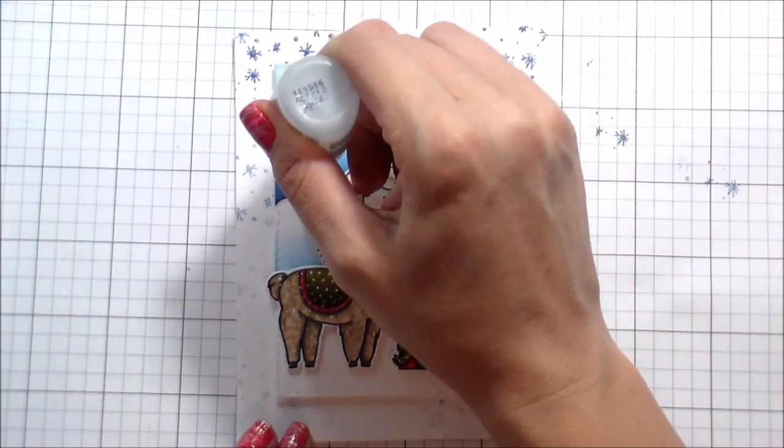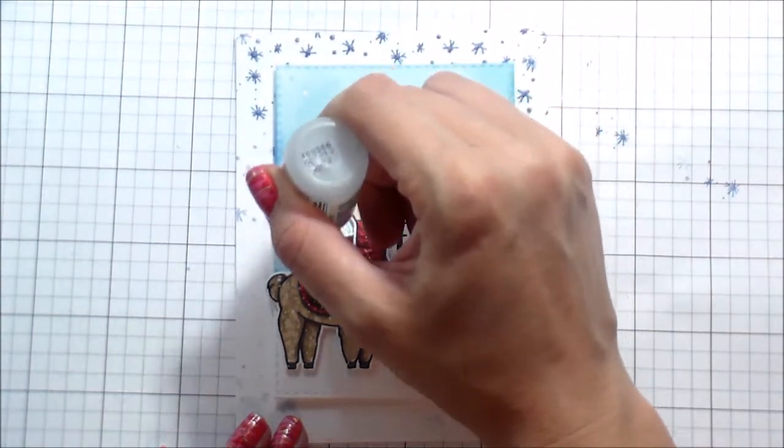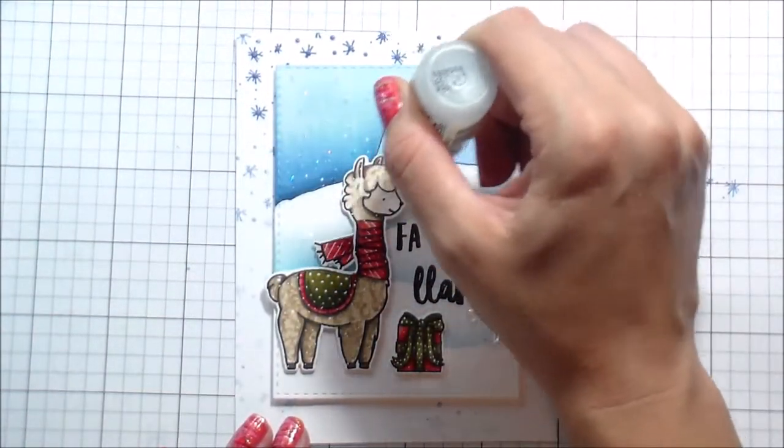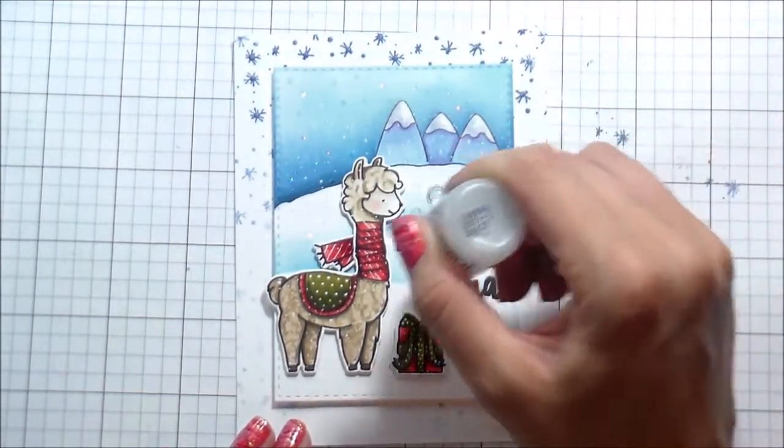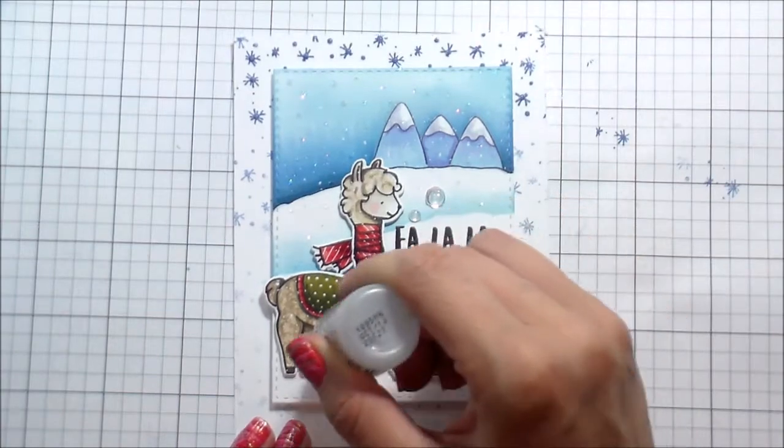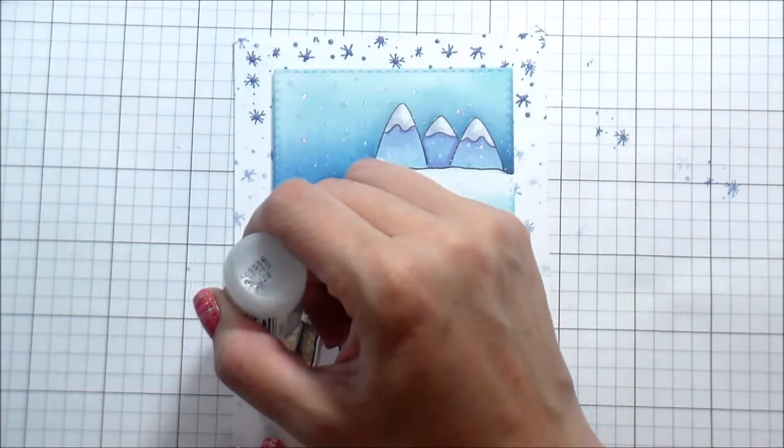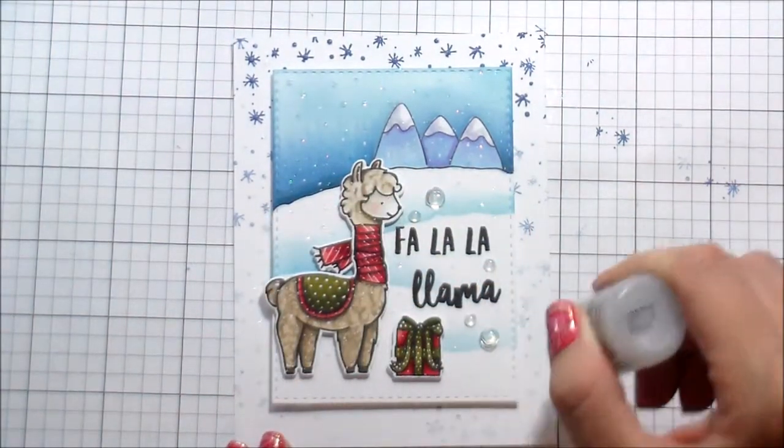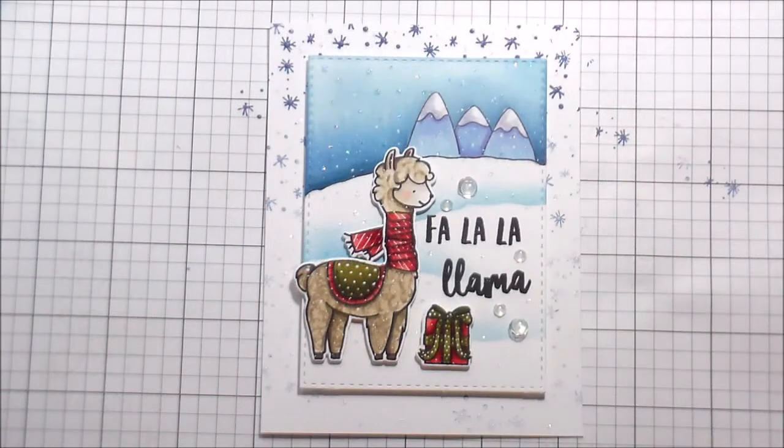Going to add some clear sequins from the neat and tangled clear sequin party mix. And then before Wink of Stella, we had this thing called Stickles. I don't know how long you've been in the crafting industry, but I've been here a minute. I loved Stickles, particularly Stardust Stickles because that matched everything and it took on the color of whatever you put it on top of. I could have bought stock in Stardust Stickles. I still use it because it's glitter. And if you need me to explain to you why we put glitter on there, we can't be friends. But I dotted that all over just everything. And then that's the whole card.